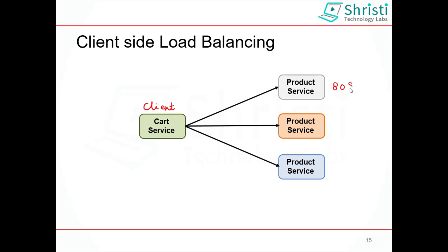For example, in our case I am running product service on ports 8081, 8082, and 8083. The client for this product service is cart service. If the number of requests are more, we need to add Ribbon. Ribbon behaves like a client side load balancer — it uses certain load balancing algorithms or rules to connect to a service running on a particular port number. This is how client side load balancing works: the client has the responsibility of picking and choosing the appropriate service running on a particular server.